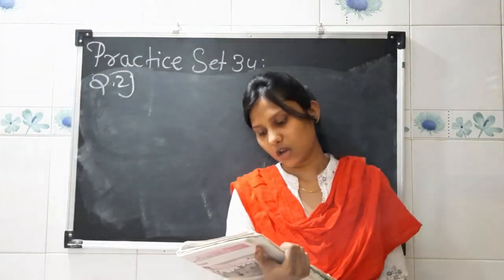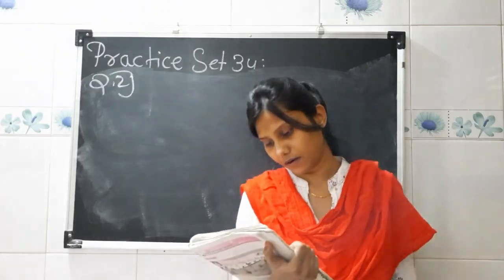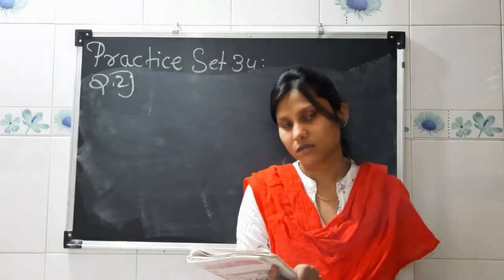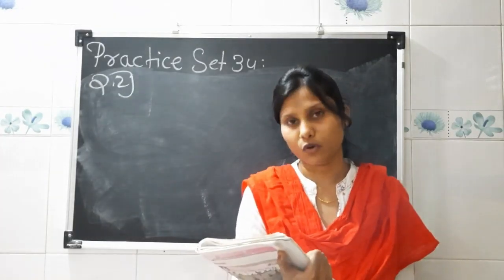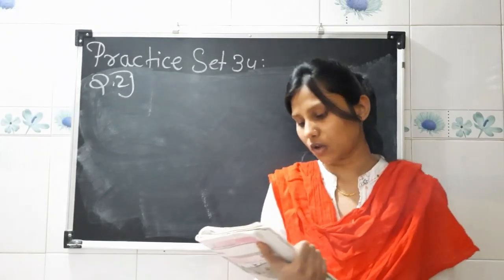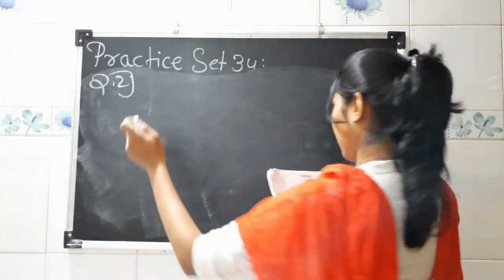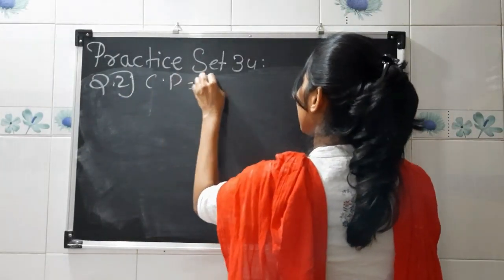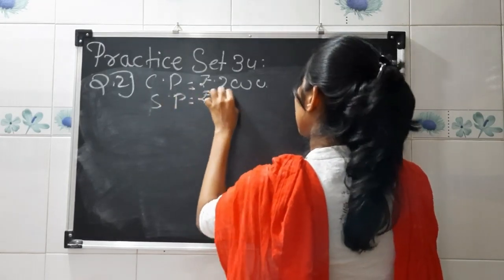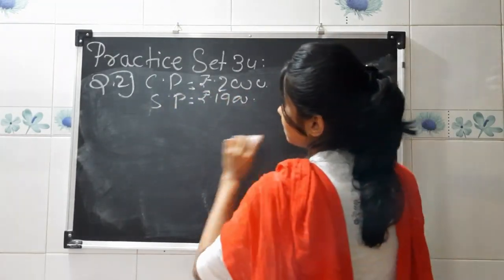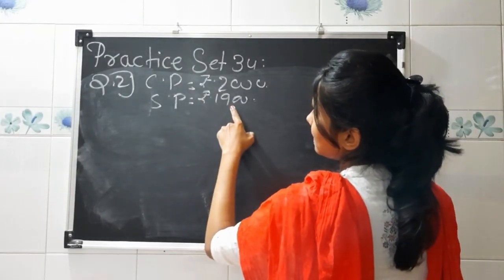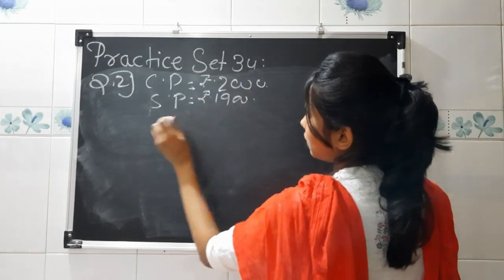Next, cost price is rupees 2000 and selling price is rupees 1900. Again, for this second one, you have to frame your own problem — I will just show you how to solve it. Cost price is rupees 2000 and selling price is rupees 1900. Here, selling price is less than cost price, so therefore it is a loss.